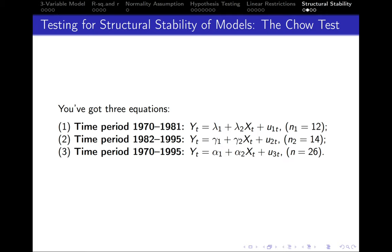To be able to do that, first of all, we need to split the sample. The time period from 1970 till 1981, in this case we'll have 12 observations. The second sample is the time period from 1982 till 1995, so the second half of our overall time period. In this case we've got 14 observations.